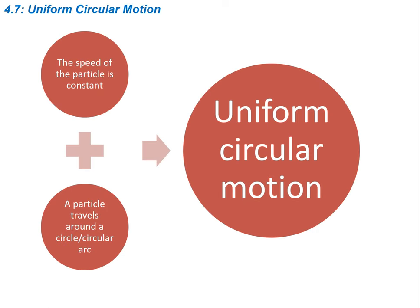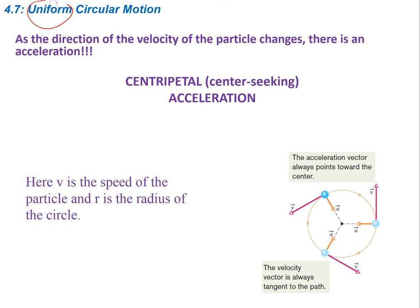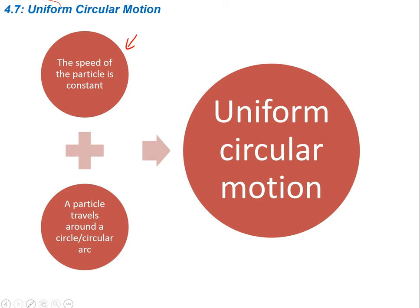Uniform circular motion is essentially two things. First, the speed of the particle is constant — and notice it says speed, not velocity. And then a particle travels around in a circle or an arc. So you have a constant speed and you're going in a circle. You are accelerating because you're changing direction, but you're not changing the value or the magnitude of the speed or the magnitude of the velocity.